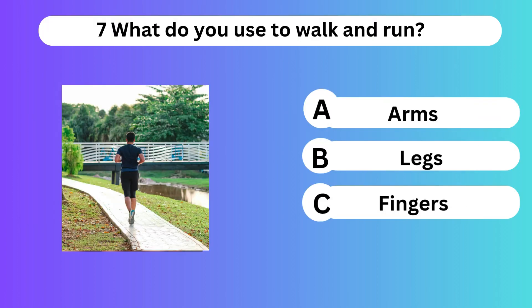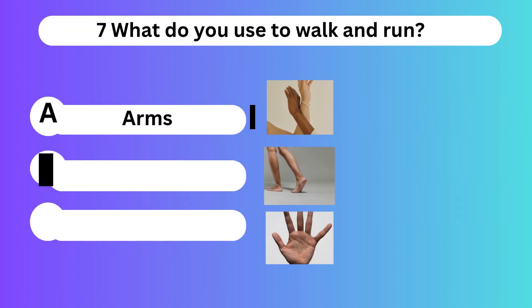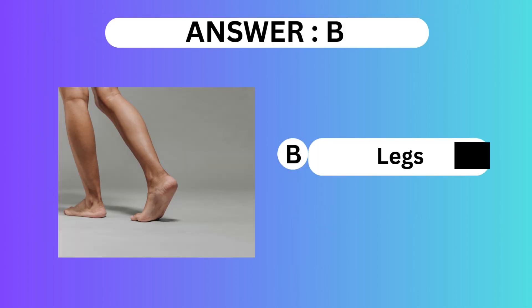Question 7. What do you use to walk and run? A. Arms. B. Legs. C. Fingers. Answer is B. Legs.